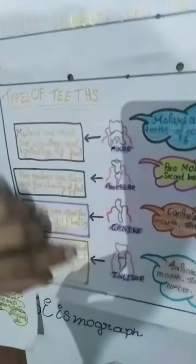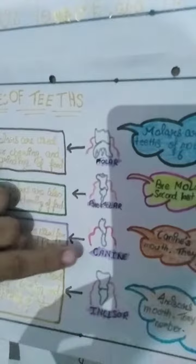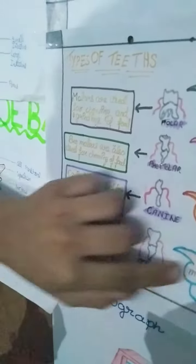Now, our teeth. The teeth are of four kinds: molars, premolars, canine, and incisors. Incisors are the first in the mouth. They are four in number. Incisors are used for cutting and biting of food.